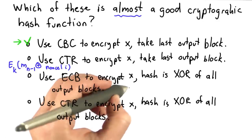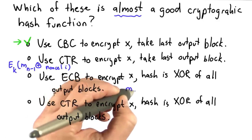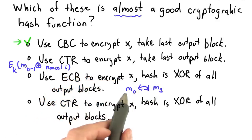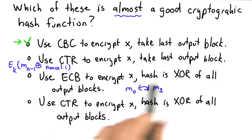And one example with ECB mode, well, we can just flip the messages. If we swap the first block of the message with the second block of the message, the xor of all the output blocks will still be the same since with ECB mode, these will encrypt to the same thing.